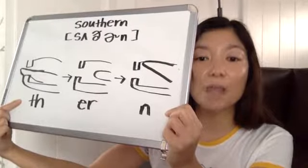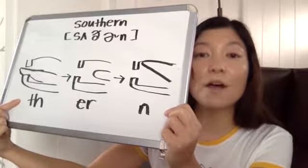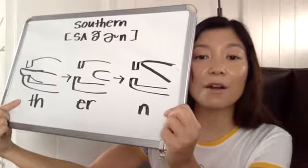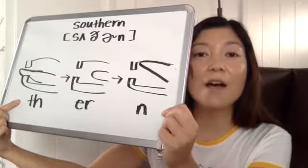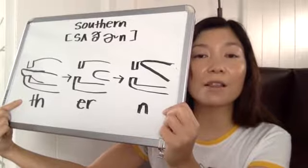So do TH and then go thur, thur. And then add N. Thurn, thurn, thurn.